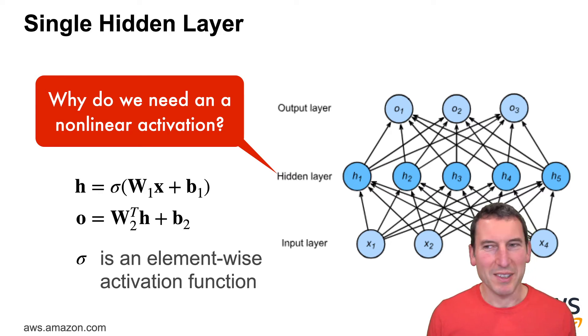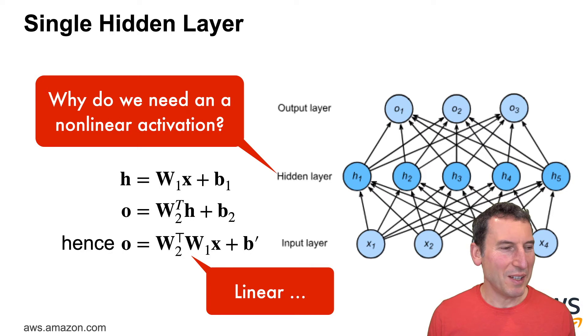So why do we need that non-linearity? Well, if we didn't have it, then you could write O is W2 times W1 times X plus B prime. B prime is some function of W2, B1 and B2. In any case, you have a linear function. In other words, a linear function of a linear function is still linear.